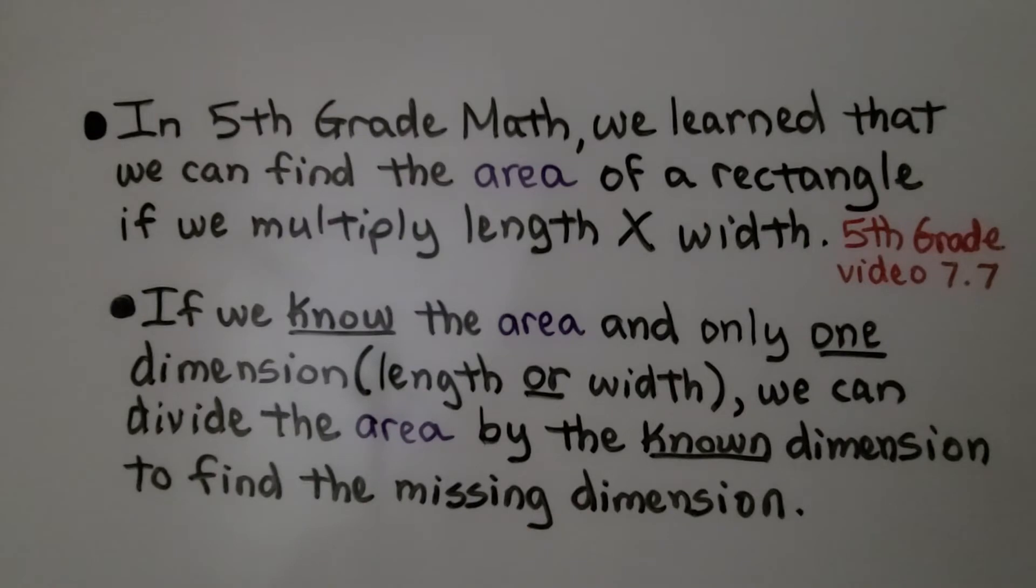If we know the area and only one dimension, like the length or the width, we can divide the area by the known dimension to find the missing dimension, the unknown one.